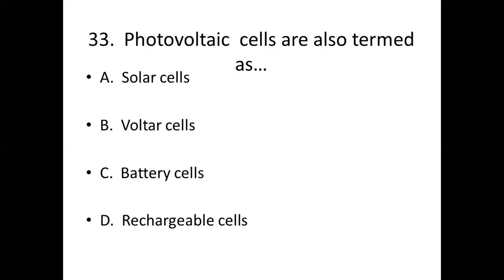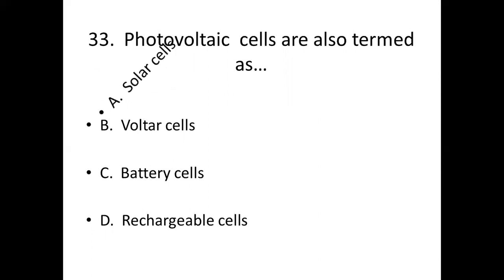33rd bit: Photovoltaic cells are also termed as dash. Option A: Solar cells. Option B: Voltaic cells. Option C: Battery cells. Option D: Rechargeable cells. Answer — Option A: Solar cells.